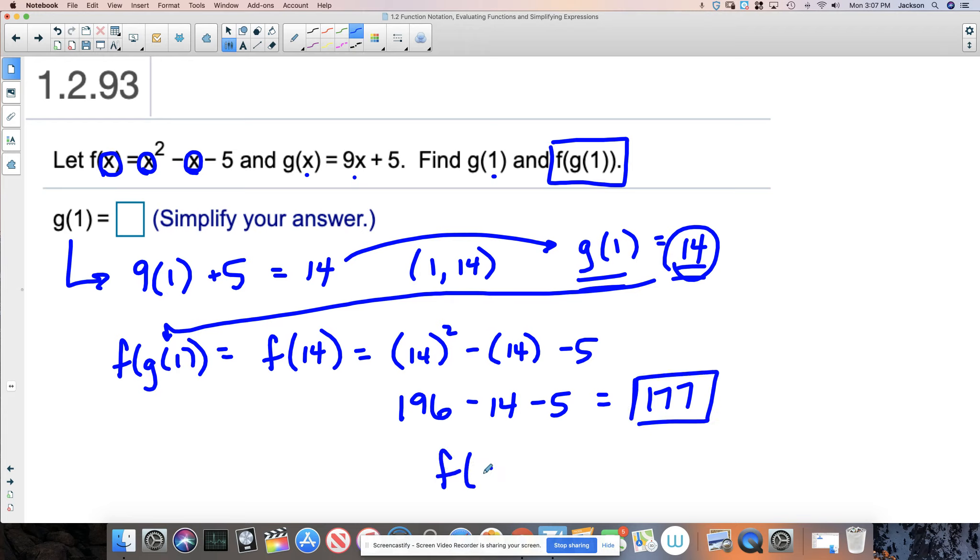So in other words, f of g of 1 is equal to 177. When I plug that into here, I get that as my output. So a little bit more complicated, we call this a composition, where the output from one function becomes the input to the other. We're going to discuss that later on in the unit.